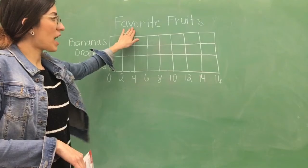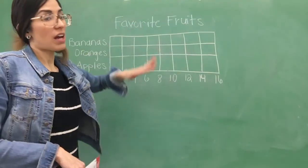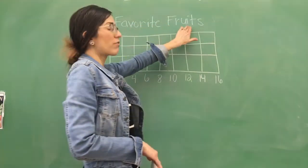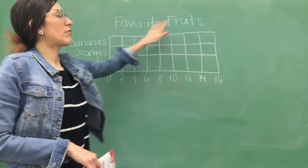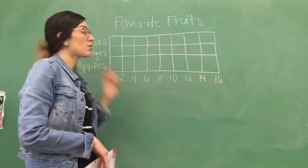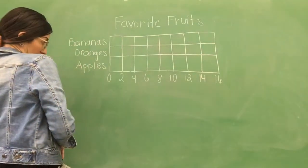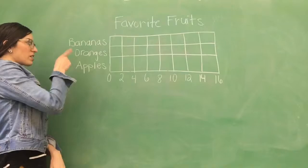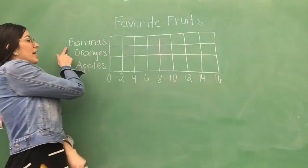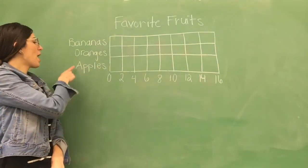Now, the bar graph has a title. The title of the bar graph is always on the top. So we have favorite fruits. So today we're going to be talking about our favorite fruits, okay? So, let's see here. We have the fruits. What kind? Oh, they're always on the side. They have bananas today, oranges, and apples.